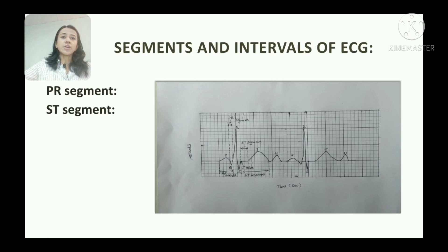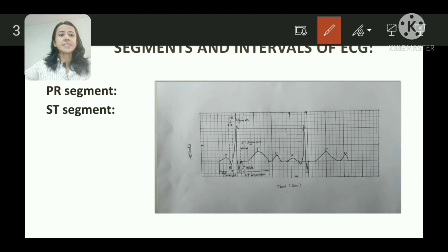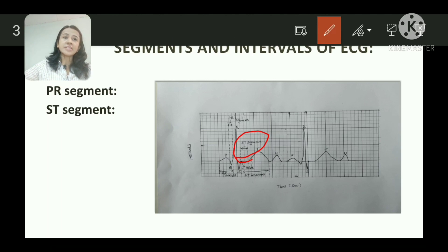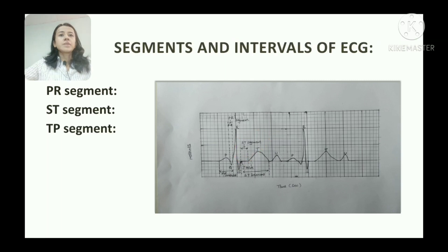Next is the ST segment. It is an isoelectric period that extends from the end of the S wave to the beginning of the T wave, as seen in the diagram. It measures the time from the end of ventricular depolarization to the onset of ventricular repolarization. Its duration is 0.04 to 0.08 seconds. The ST segment is elevated in patients with myocardial infarction.